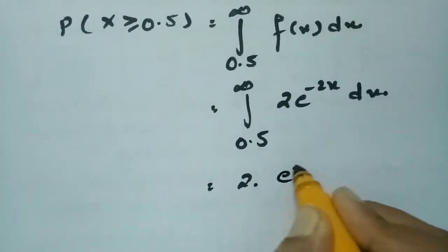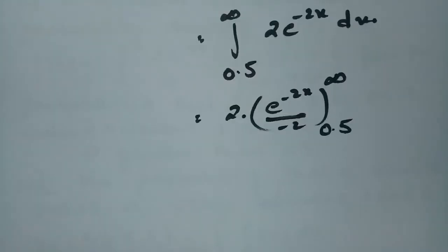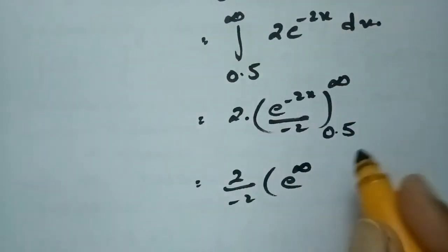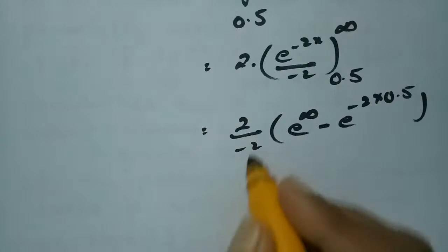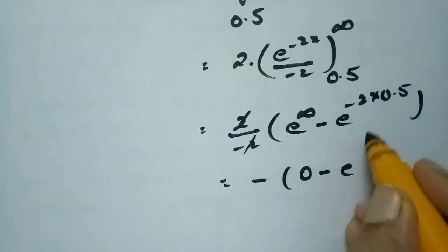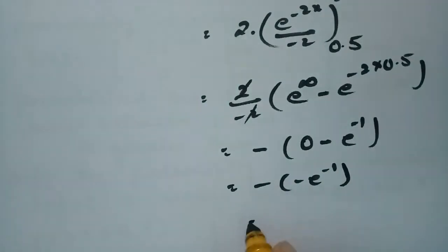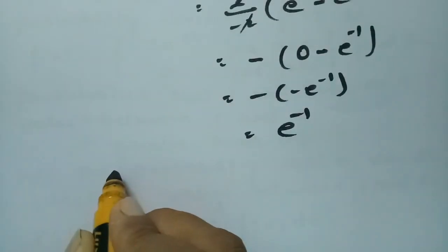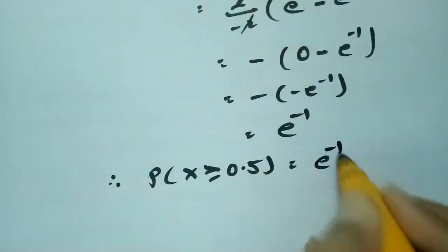Again, 2 is a constant, so we integrate to get 2e^(-2x) divided by minus 2, evaluated between 0.5 and infinity. Anything raised to the power of infinity is 0, so the upper limit contributes 0. The lower limit gives minus e^(-2 × 0.5) = minus e^(-1). After the 2 and minus 2 cancel, the result is minus(0 minus e^(-1)), which equals e^(-1). Therefore, P(x > 0.5) = e^(-1).